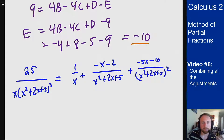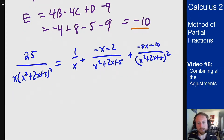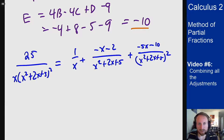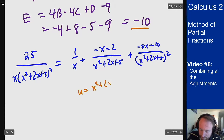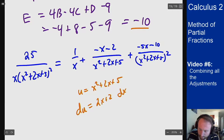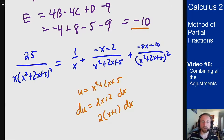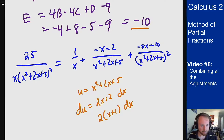A lot of work to get there, but we finally have the decomposition. Before integrating, we need to manipulate the numerators slightly. For the log terms we want u = x² + 2x + 5, so du = (2x + 2)dx. This means our numerators need an (x + 1) in them rather than just an x.